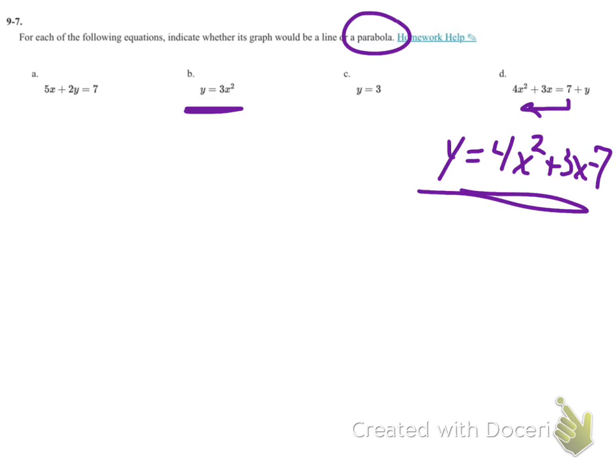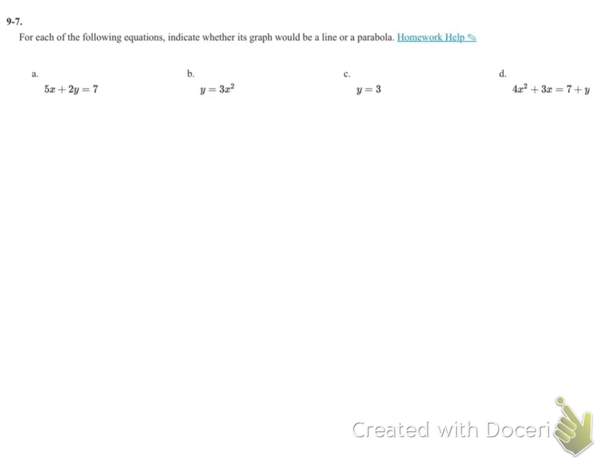Now if I want to look at a and c, are those going to be linear? A looks a little bit different. It's 5x plus 2y equals 7. Normally we have a line as y equals mx plus b.